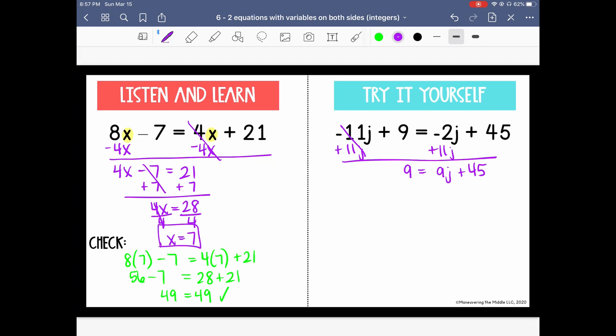So let's isolate the variable. Let's undo the addition by subtracting 45 from both sides. 9 minus 45 is negative 36.